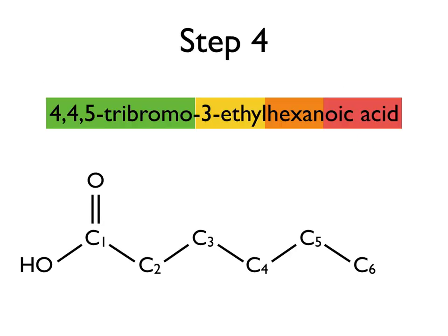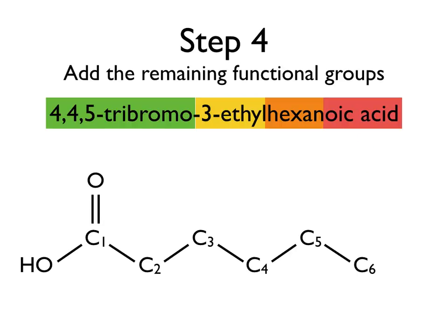After that, we need to distribute our other functional groups. We'll begin with that tribromo. Bromo means bromine atoms and tri means that there are three of them. The name of the molecule indicates the positions: two on the fourth carbon atom and one on the fifth carbon atom. So we'll go ahead and put those on there.